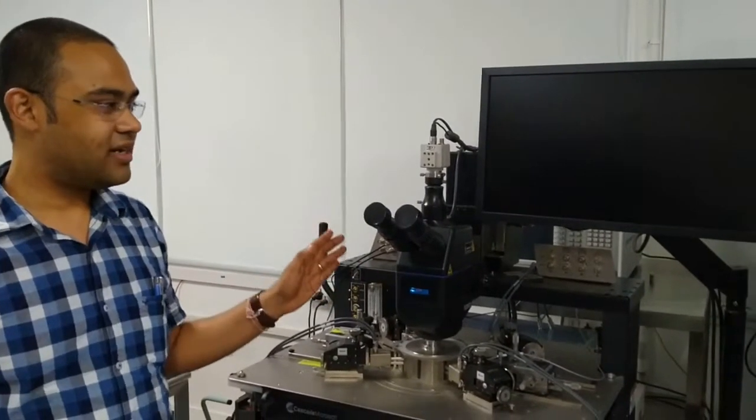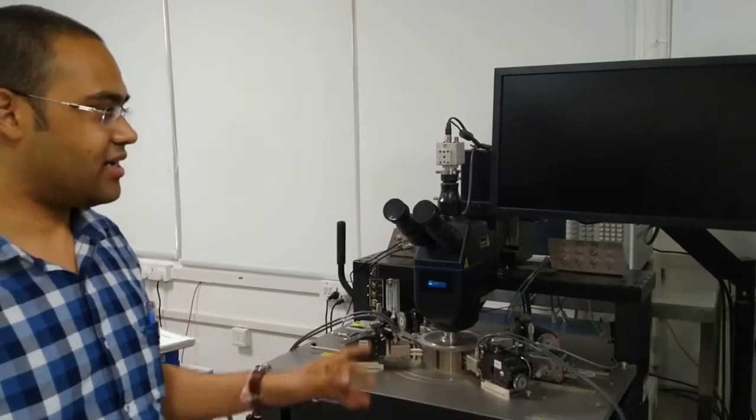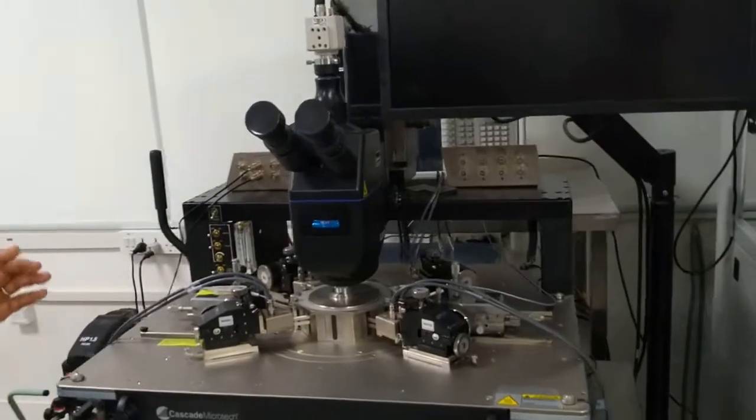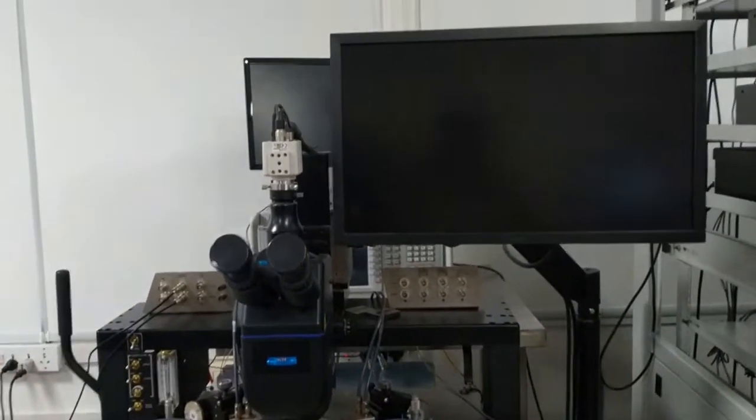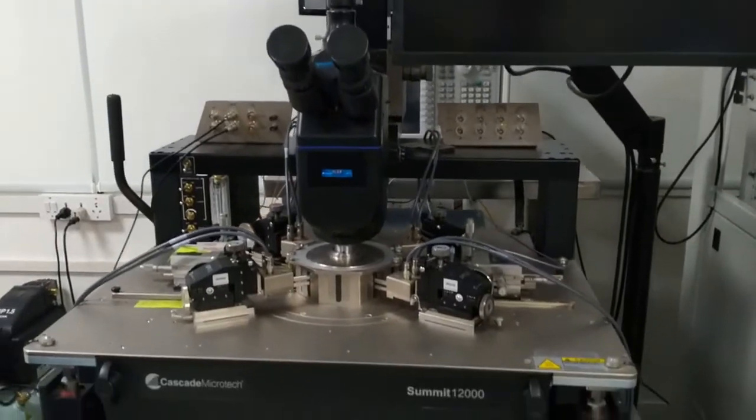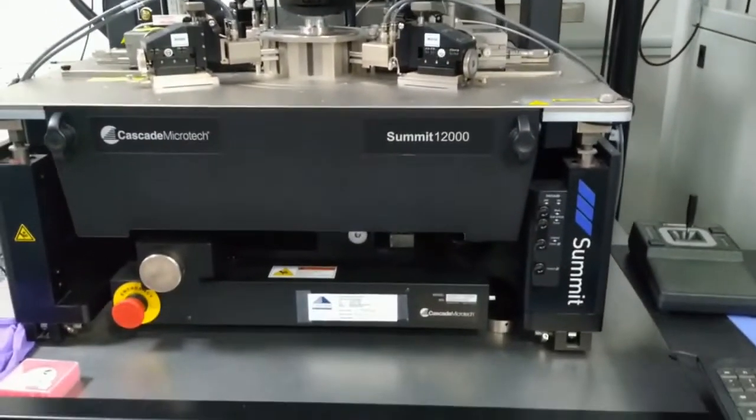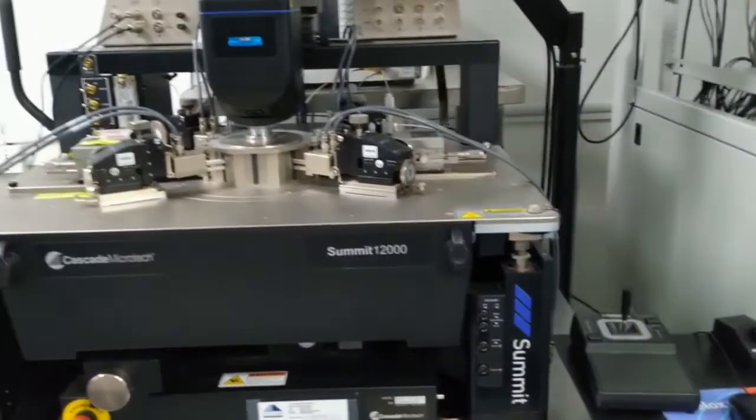This is the semi-automatic probe station which enables automated on-wafer DC RF device characterization and reliability tests. This probe station is automated by control software which allows us to carry out automatic characterization of thousands of diodes and transistors in each wafer. This tool has been extensively used for technology development of graphene terahertz technology and high-powered GaN technology.